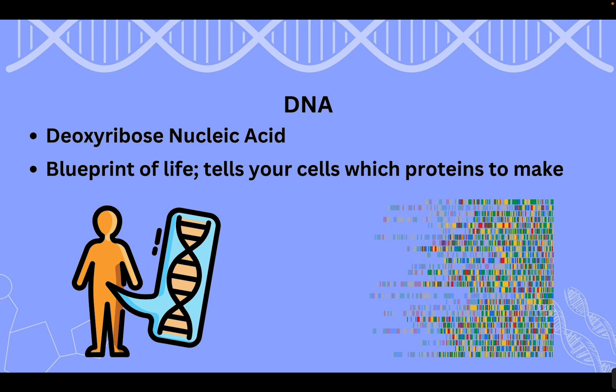DNA is known as the blueprint of life. It has all of the information necessary to tell your cells what proteins to make, how they're going to look, and how they're going to function. Even though DNA is not part of the final product, there would be no product without this instruction manual, which is found across all living organisms. If you are made of at least one or more cells, you have DNA.